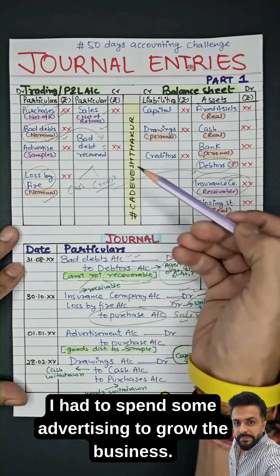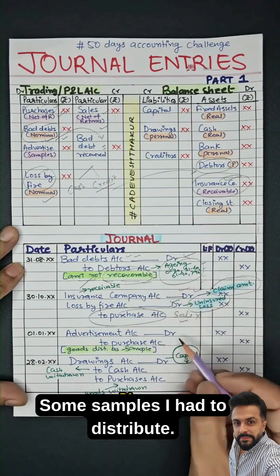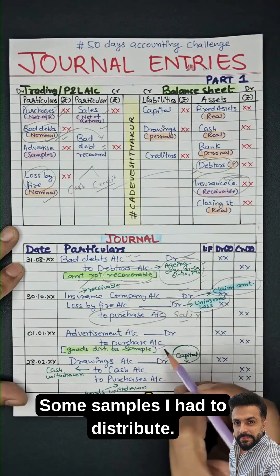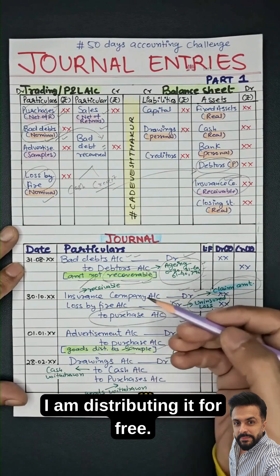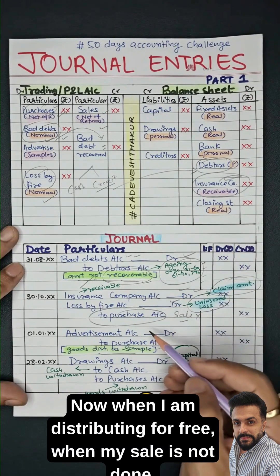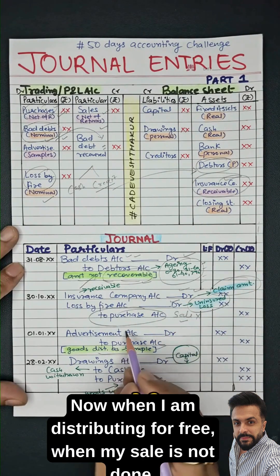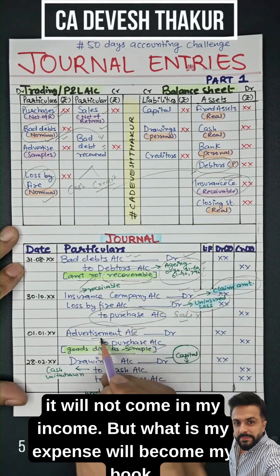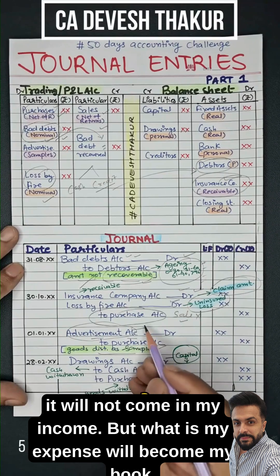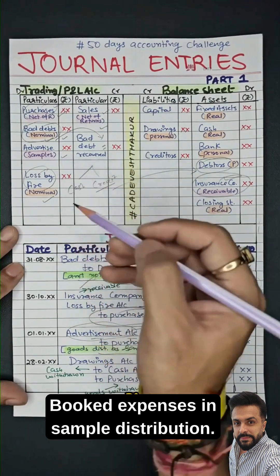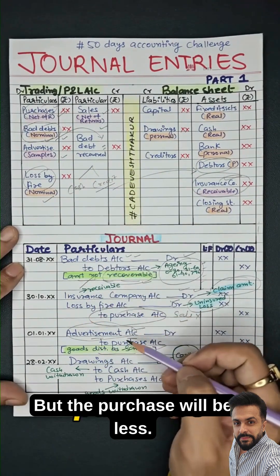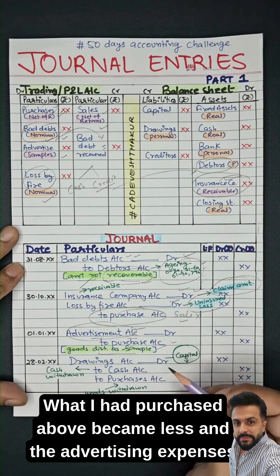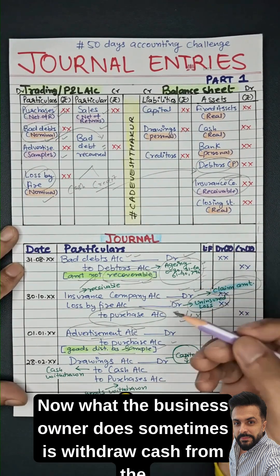Now, what was purchased — I had to spend on advertising to grow the business. Some samples I had to distribute, meaning I am not selling what was purchased but distributing it for free. When I am distributing for free and no sale is done, it will not come in my income. But the expense will be booked as sample distribution expense. The purchases will be reduced, advertising expenses will increase, and I will debit them.